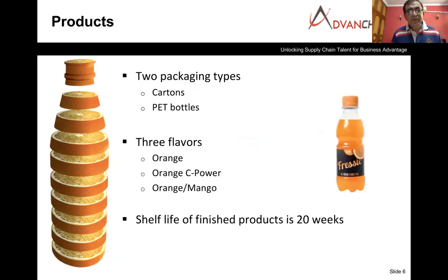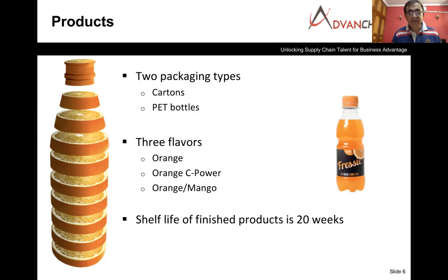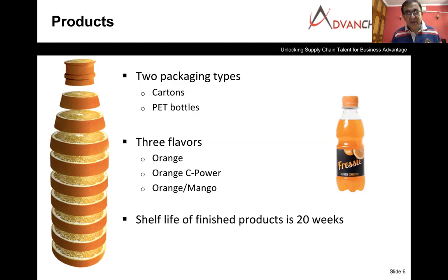The company has two pack types: one-liter carton packs and 0.3-liter PET bottles. It has three flavors — orange, orange with vitamin C, and orange mixed with mango — giving six SKUs in total. Very important is the shelf life of the product, which is limited to 20 weeks. From the date of manufacturing until the product is consumed, you have only 20 weeks available; after 20 weeks the product is not fit for consumption.